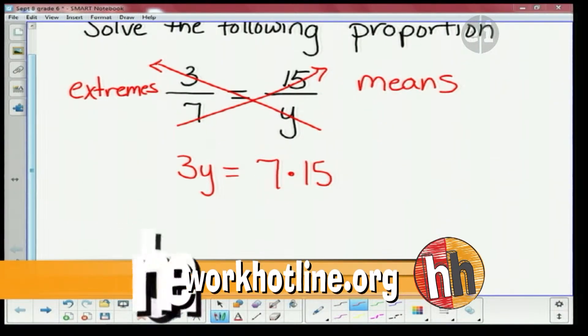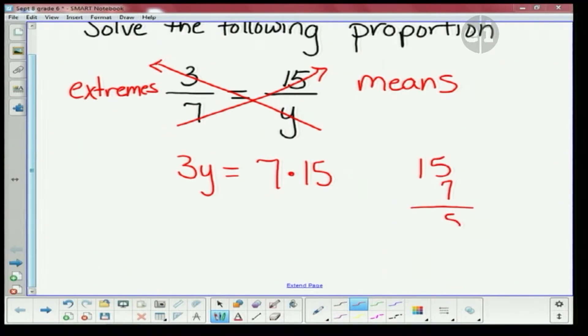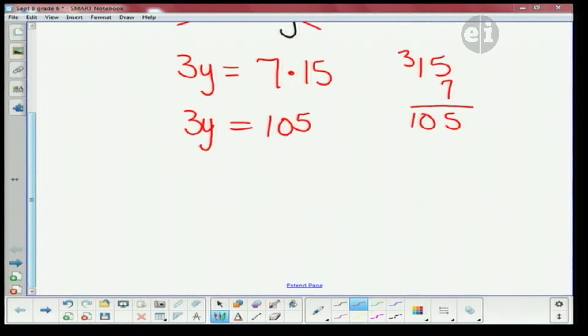Let's see, we'll do it the long way over here: 7 times 5 is 35, carry the 3; 7 times 1 is 7, add 3 is 10. So I get 105, and 3y.